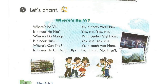Activity three. Let's chant. Where's Ba Vy? It's in North Vietnam. Is it near Hanoi? Yes, it is. Yes, it is. Where's Da Nang? It's in Central Vietnam. Is it near Hue? Yes, it is. Yes, it is.